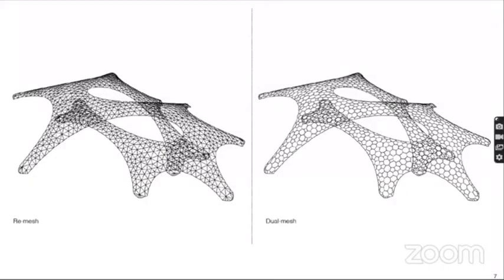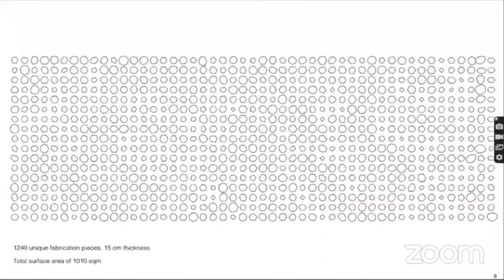For the fabrication strategy, I thought of implementing the dual mesh in a manner that I would still get my edge pieces and they would still be supported on the floor. The remesh was also a little bit of a challenge because I didn't have the combo Seagull installed, but I went to Grasshopper basics and did it there. I got about 1,240 unique fabrication pieces, about 15 to 20 mm thickness.